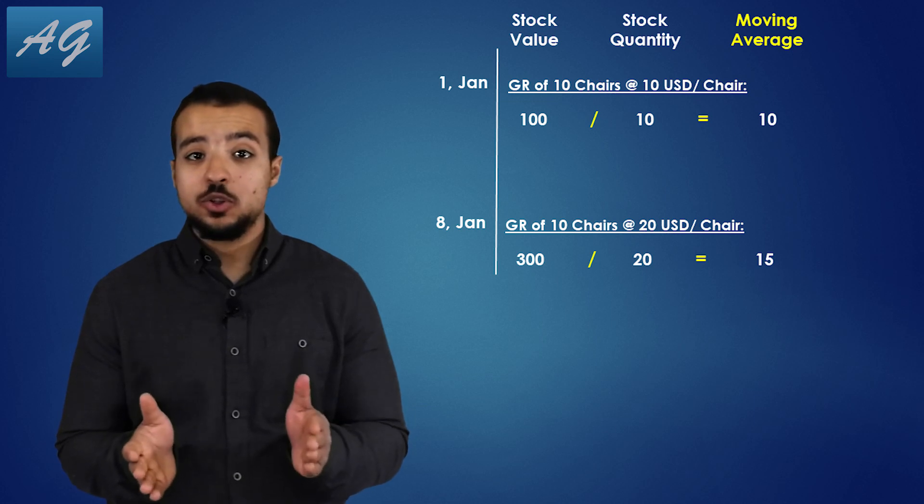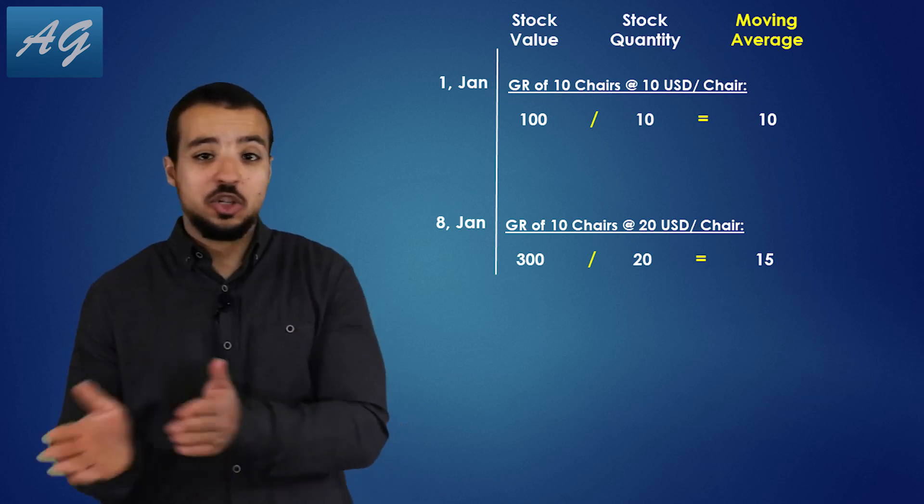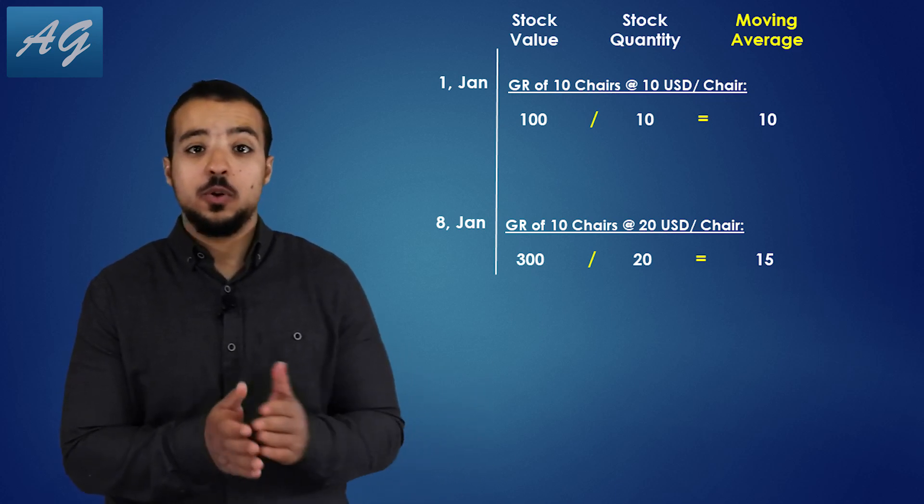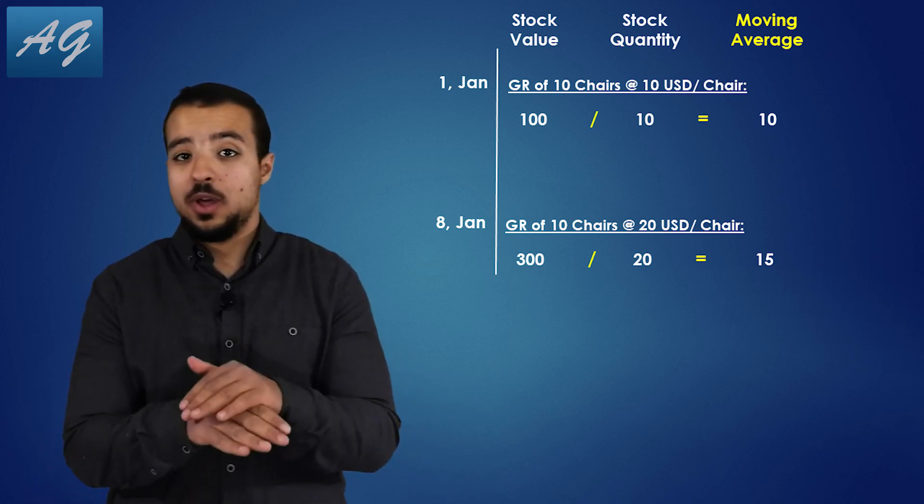So as you see, moving average doesn't recognize the difference between the shares we buy at a cheap price and the other shares we buy for an expensive price, because they are both the same shares, they both have the same material code, and they are both the same product exactly.